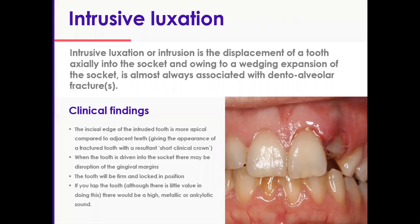But it really depends on the degree and severity of intrusion obviously. Clinically the incisal edge is more apical and sometimes looks like as if it is fractured. As you can see in this close-up photograph, by just looking at it you may think that the crown is snapped off. So you have a short clinical crown. Gingival margins may be lacerated or disrupted and the tooth is going to be firm and locked in.